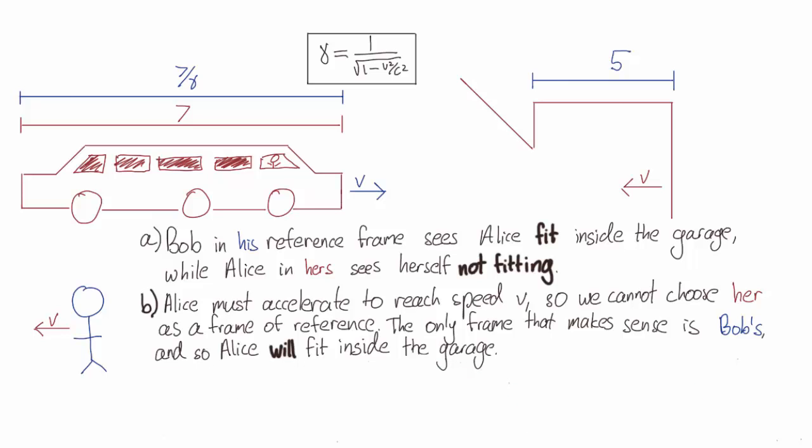What about answer B? We've said that inertial reference frames can't be accelerating. They have to be moving at a constant speed. Obviously, for Alice to reach speed v, she's going to have to do some serious accelerating.